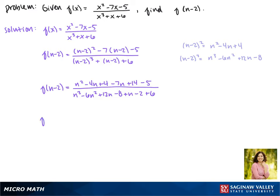Now we'll simplify this by combining like terms. In the numerator, we only have one n squared term. We have two n's, negative 4 and negative 7, which make negative 11n. And then 4 plus 14 makes 18 minus 5 is 13, so that our constant is 13.